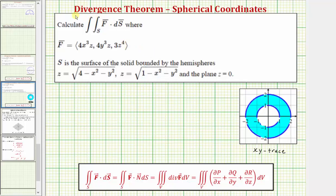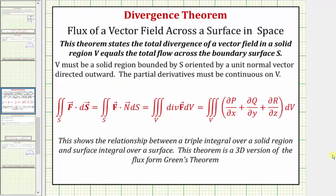Before we set this up, let's review the divergence theorem. The divergence theorem states that the total divergence of a vector field in a solid region V equals the total flow across the boundary surface S. V must be a solid region bounded by the surface S oriented by a unit normal vector directed outward, and the partial derivatives of the vector field F must be continuous over the solid region V. We can evaluate the flux integral by writing it as a triple integral over the solid region V of the divergence of F differential V, showing the relationship between a triple integral over a solid region and a surface integral over a surface.